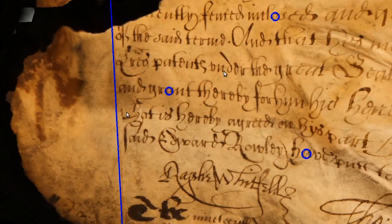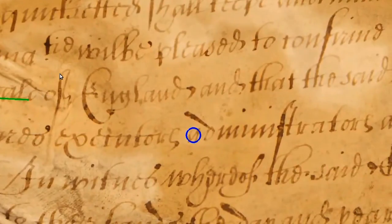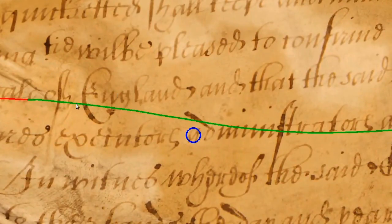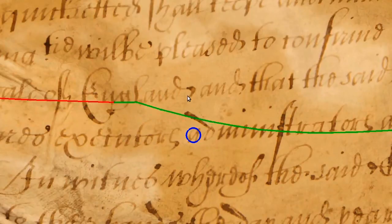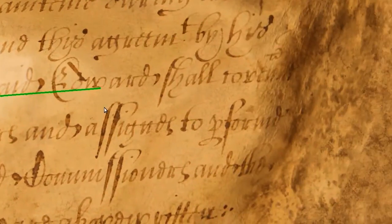Detecting text lines and borders is complicated by the distortion and discolorations. These can cause the automatic line tracing methods to fail and jump between different text lines. Therefore, we use a semi-automatic approach, enabling the user to correct wrong estimates.